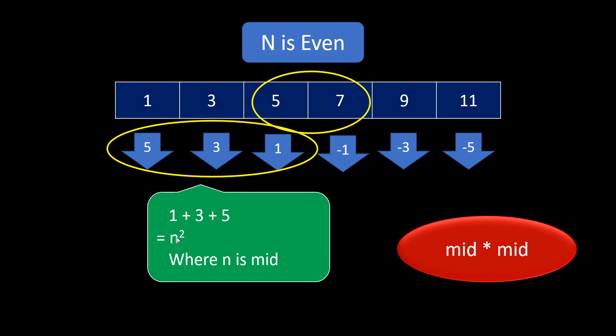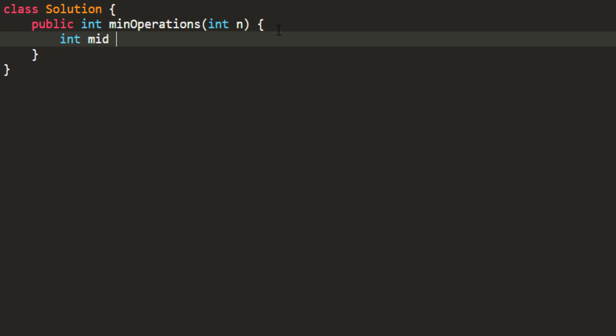So, let's just go ahead and quickly write the code for it. Initially, I need a mid which would be n by 2 and over here we need to use a ternary condition based on my odd and even factor. So, I will return if my n mod 2 is 0 that is if it is a even case, I can simply return mid multiplied by mid. Otherwise, I need to do mid into mid plus 1.